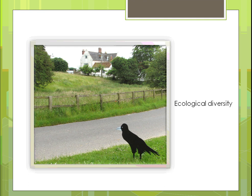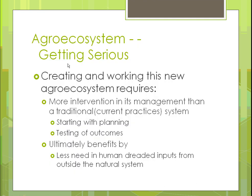Here's an example of diversity — a farmstead with pasture land and trees, where crops will eventually grow. It shows a diverse thing growing on its own with not much interference from the farmer.